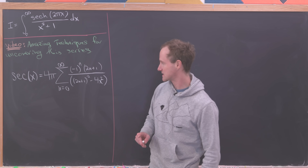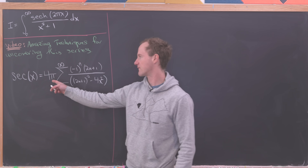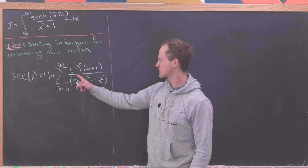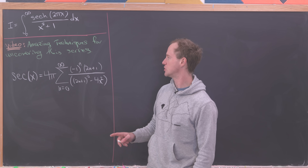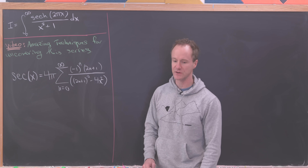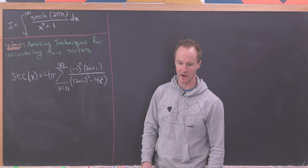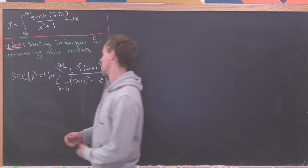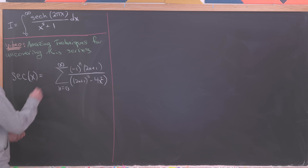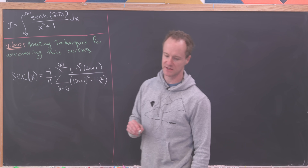That video writes sech(x) as the following infinite sum: 4/π out front, and then this sum of (-1)^n times (2n+1) over (2n+1)² minus 4x². I just realized there should be a π in the denominator, so I'm going to write this as 4 over π.